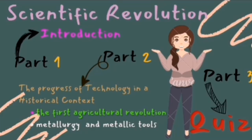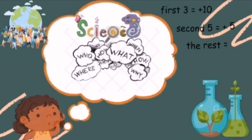On this first part, we are going to discuss the introduction. On the second part, we are going to discuss the progress of science and technology in historical context. Part two covers the first agricultural revolution in metallurgy and metallic tools. Part three will be the quiz for this chapter. Along the way, you will encounter plus points — just comment down below. Incentive points for my students.